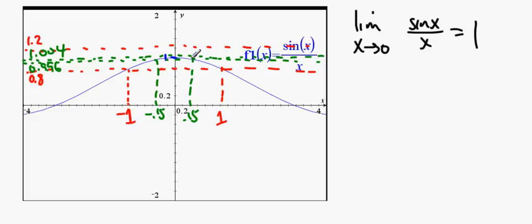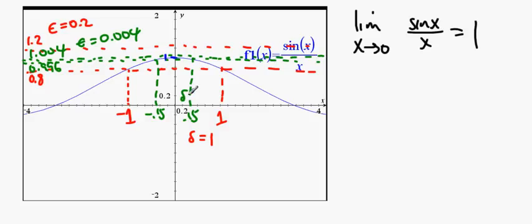Here is what we mean when we talk about limits. We say: I want to be this close to 1. In the red case, we would call that epsilon — here epsilon is 0.2, and in the green case epsilon is 0.004. That's how close we want to be to the actual limit value. Once we say that, we find a delta. In the red case delta is 1, and in the green case delta is 0.15. If you want to get this close to the limit value, you just have to get this close to the x value, and that does the trick.